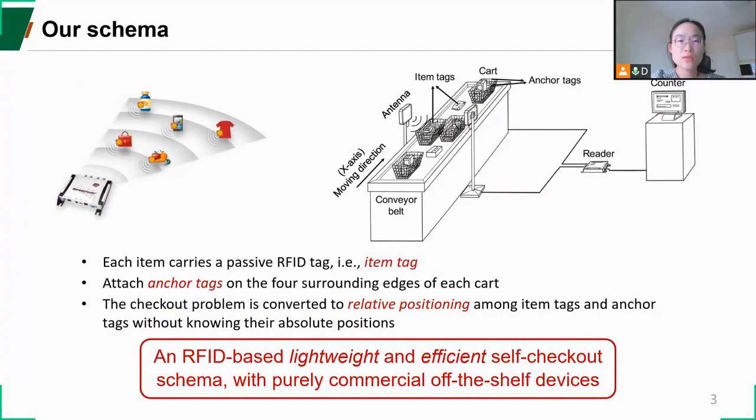As shown in the right figure, a conveyor belt is deployed, moving at a uniform speed to propel the shopping carts of users. We allow multiple users to check out simultaneously, so there may be multiple carts on the belt. The key problem here is to determine which cart each item belongs to. We attach a few anchor tags on the four surrounding edges of each cart, and the tag attached on each item is called item tag. Then the checkout problem is converted to relative positioning among item tags and anchor tags without knowing their absolute positions.